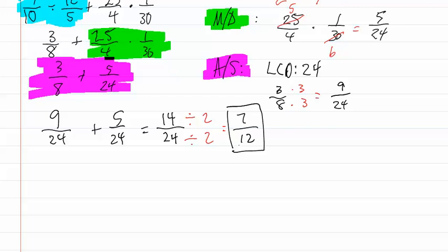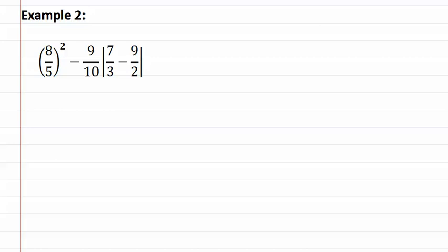There are quite a few steps, so let's look at another example. Here's example two. Once again, let's start with P for parentheses. Eight-fifths is in parentheses but there's nothing to do inside, so it doesn't count. But remember, absolute values are actually parentheses, so let's start there. We have seven-thirds minus nine-halves inside an absolute value.